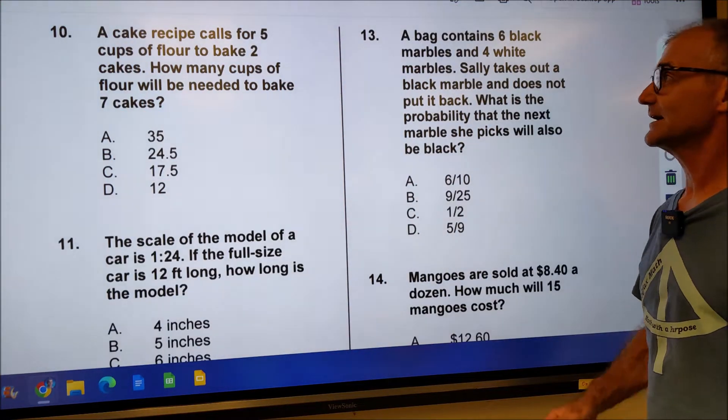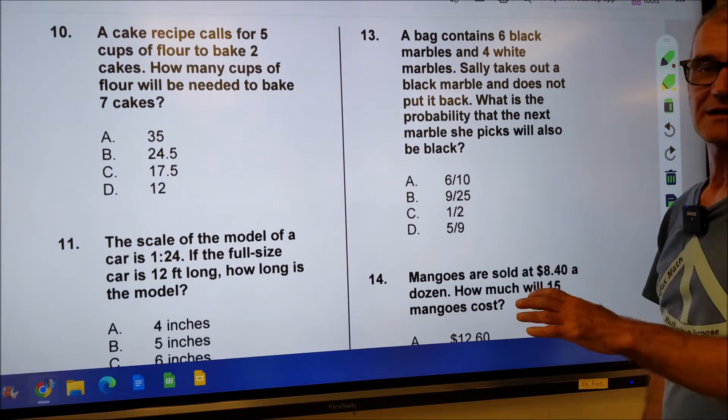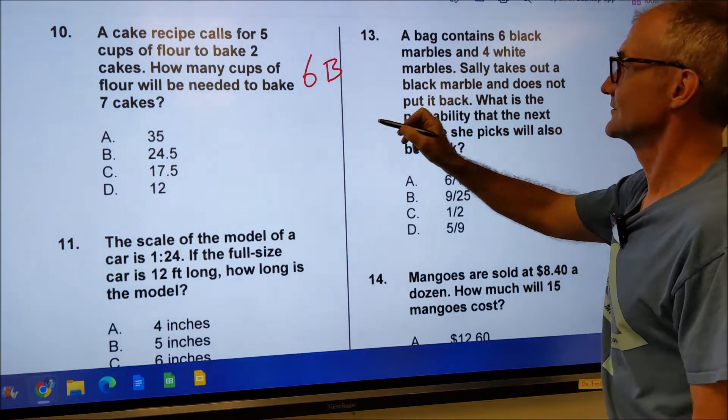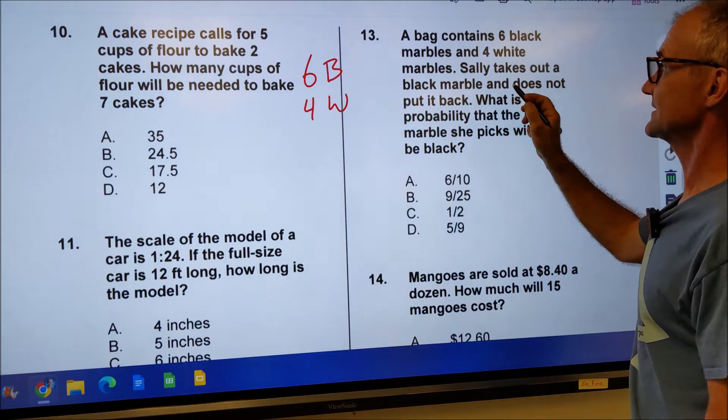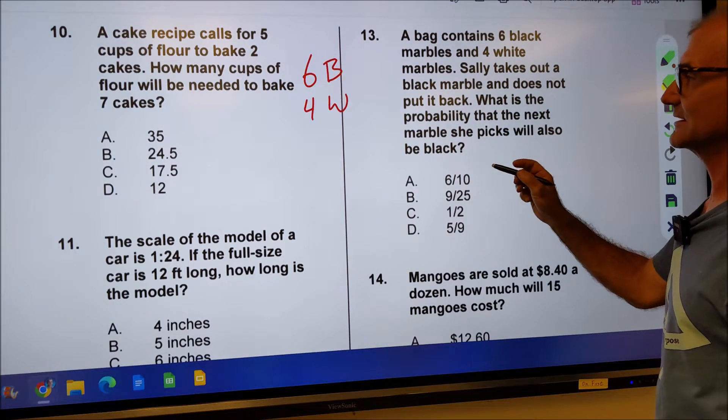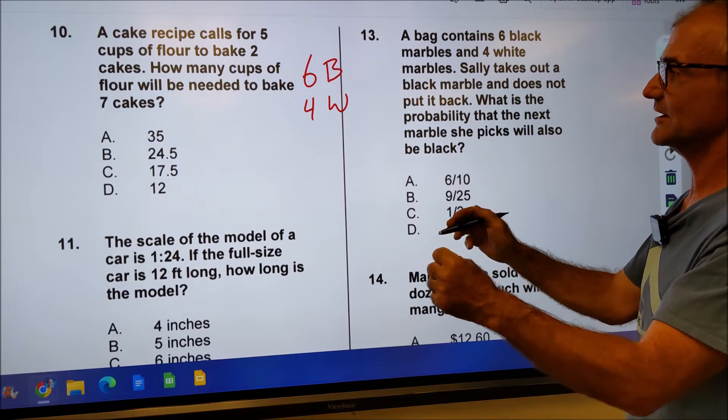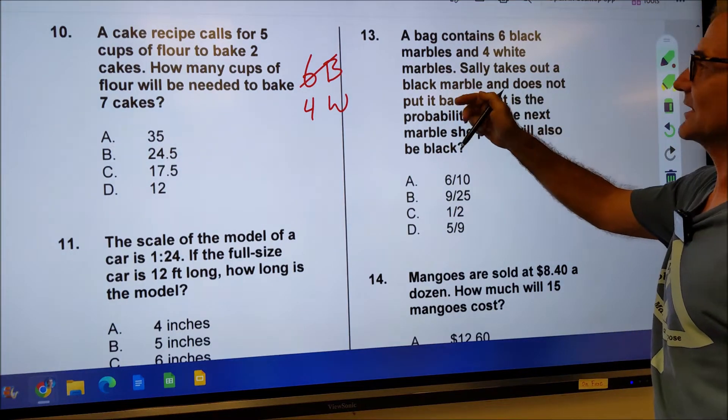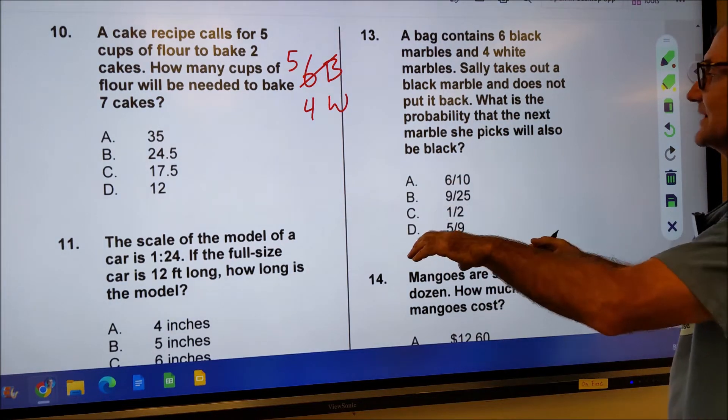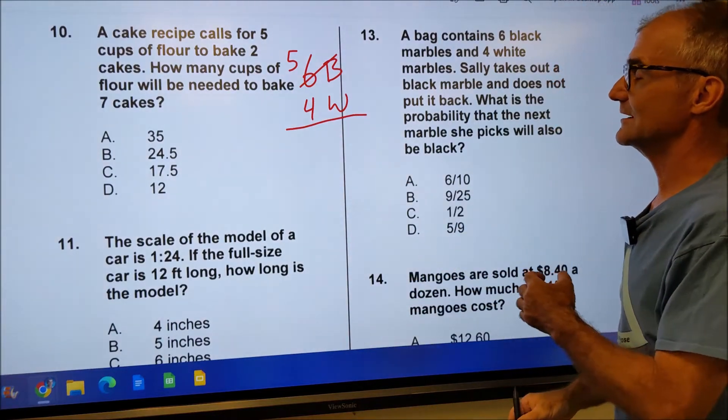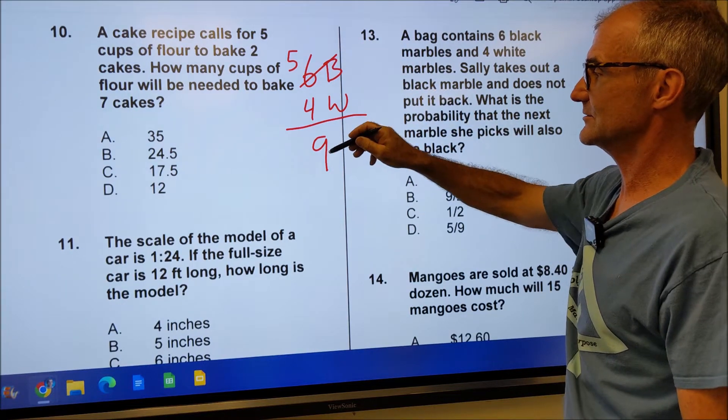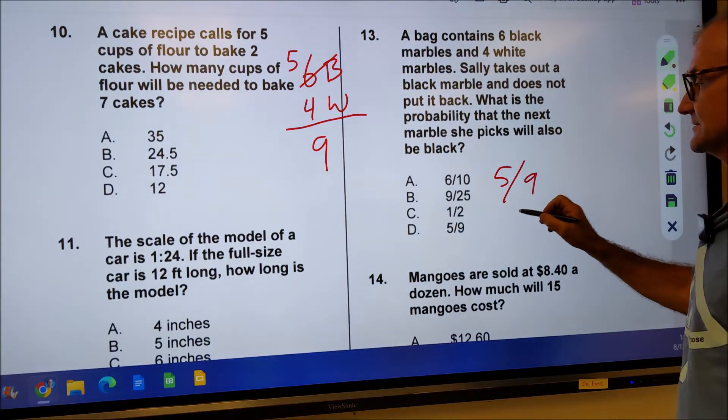I'm on number 13 right now. A bag contains six black marbles, four white marbles. Again, it's going to be chapter nine probability. I'm going to kind of write that out. I have a total of six black marbles, four white marbles. Sally takes out a black marble and does not put it back. What is the probability the next marble she picks will also be black? So we're actually not talking about the first draw. She takes one out. She takes out a black marble. So actually, I have five black marbles and does not put it back. What's the probability that she sticks her hand back in that bag and pulls a black marble out? Well, the total marbles are nine. What is the probability she pulls a black one out of the total of nine is going to be five ninths. And there's your answer right there.